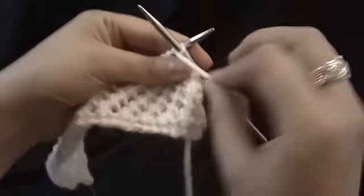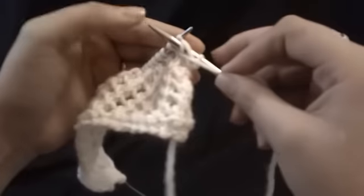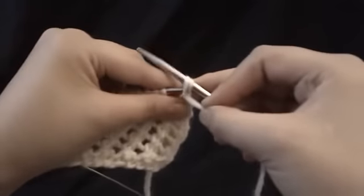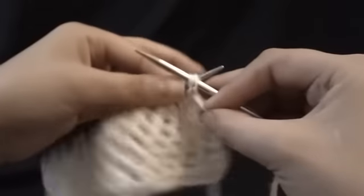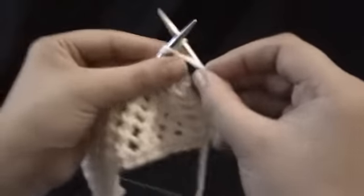So what you're going to do is purl two stitches. So we've got two stitches on our right hand needle. And then you're going to stick your left hand needle through the back of those two stitches and purl the two together.